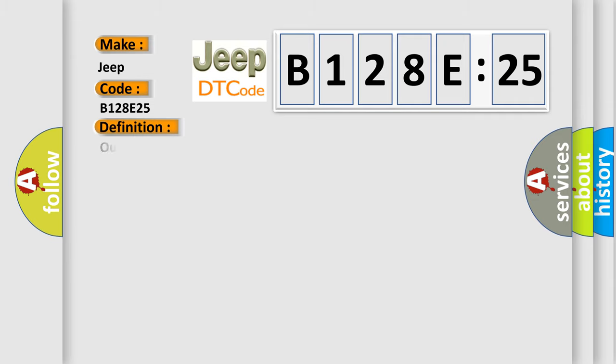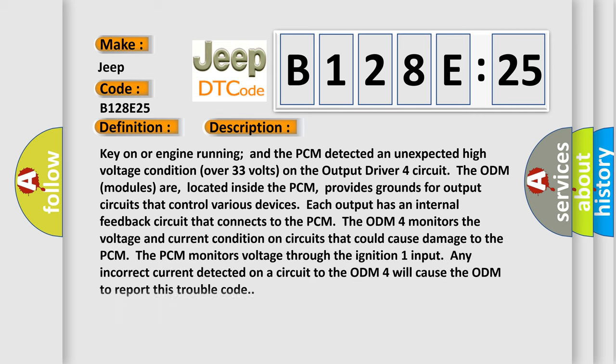The basic definition is output driver four input voltage high input. And now this is a short description of this DTC code. Key on or engine running and the PCM detected an unexpected high voltage condition over 33 volts on the output driver four circuit. The ODM modules are located inside the PCM.